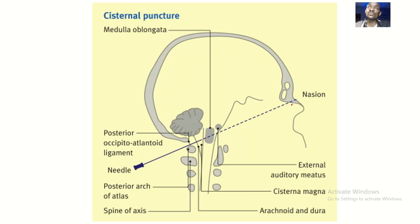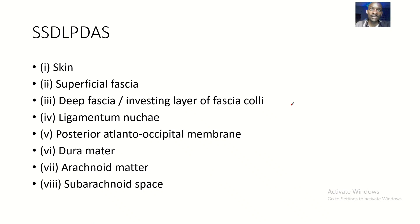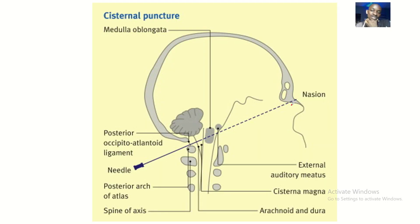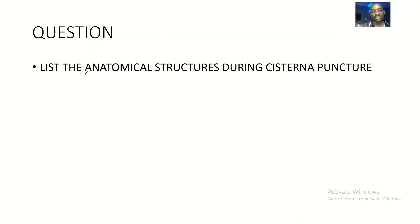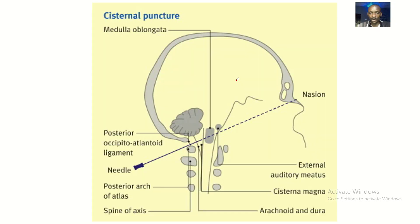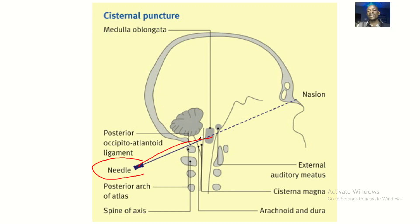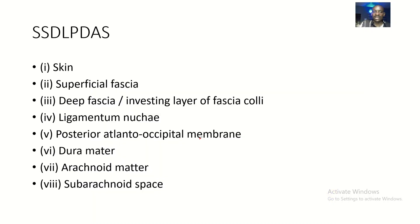The structures pierced during lumbar puncture are 9, while cisternal puncture has 8 — so the difference is just one structure. The question is: list the anatomical structures pierced during cisternal puncture. In cisternal puncture, you put a needle through the posterior side of the foramen magnum so that you can access the cerebrospinal fluid or perform any other check.